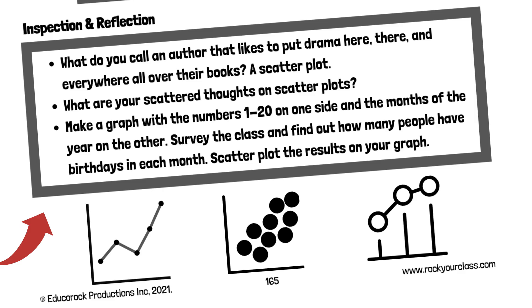What are your scattered thoughts on scatterplots? Make a graph with the numbers 1 to 20 on one side, and the months of the year on the other. Survey the class and find out how many people have birthdays in each month. Scatterplot the results on your graph.